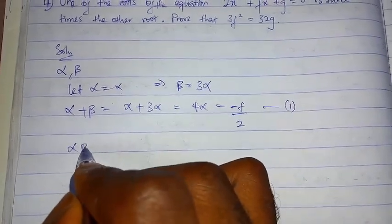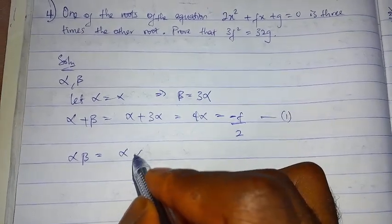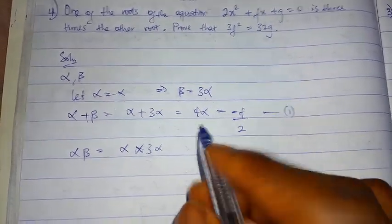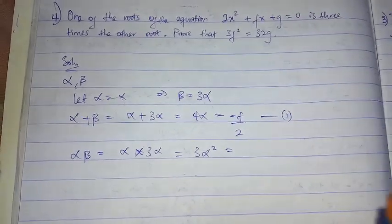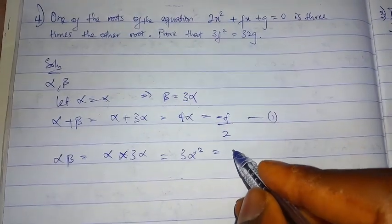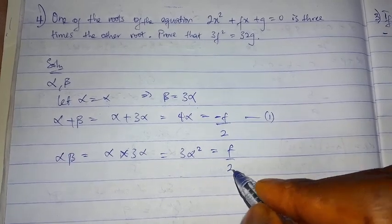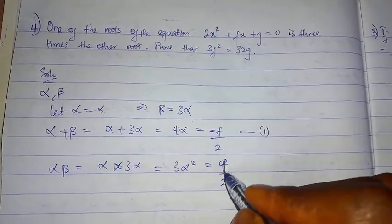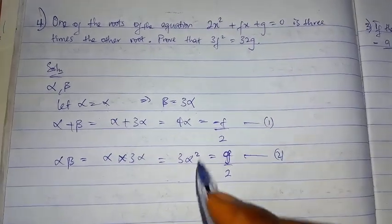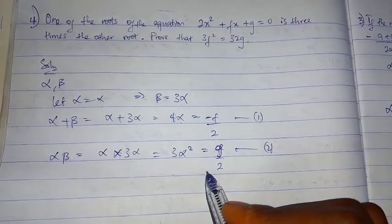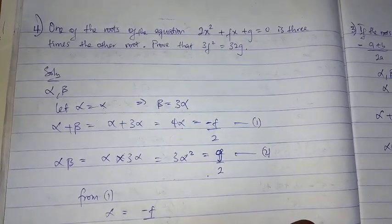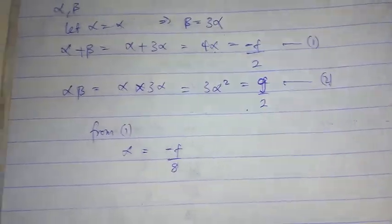For the product of roots: alpha times beta equals alpha times 3·alpha, which is 3·alpha². This equals c over a, which is g over 2. So 3·alpha² equals g over 2 — call this equation two. From equation one, 4·alpha equals minus f over 2, so alpha equals minus f over 8.